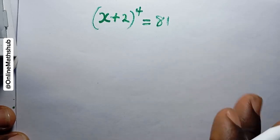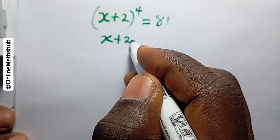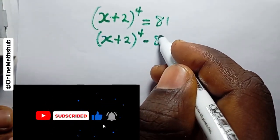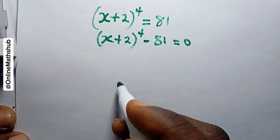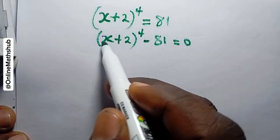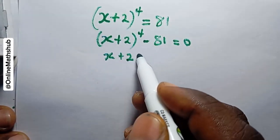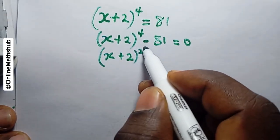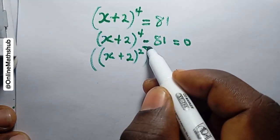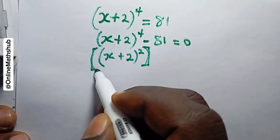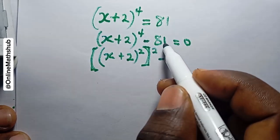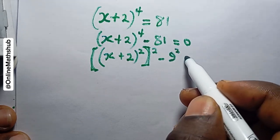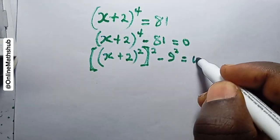The first step is to subtract 81 from both sides, giving us (x + 2)^4 minus 81 equals zero. Next, I'm going to rewrite (x + 2)^4 as [(x + 2)^2]^2, and also write 81 as 9^2 — the idea is to convert these into perfect squares.